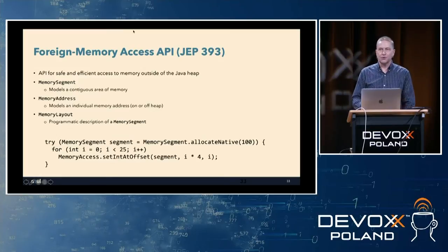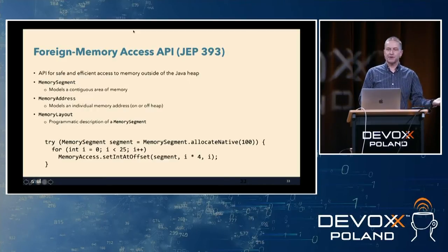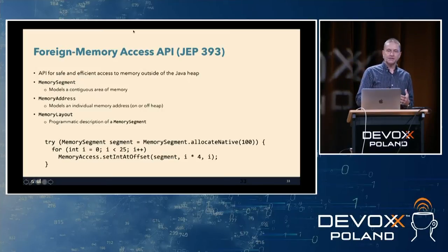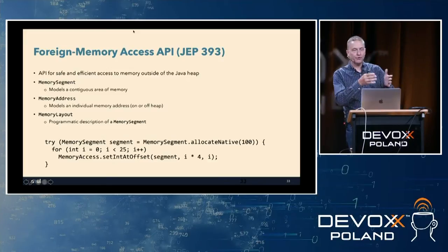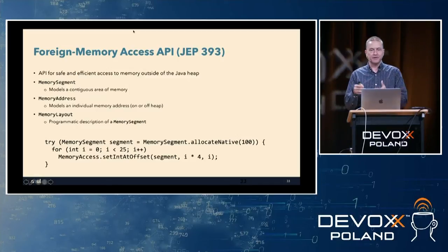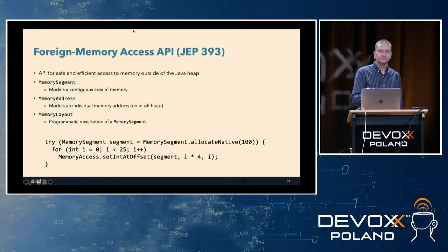A very simple example: we want to allocate some space. For those who've done C programming, this is kind of like malloc. We say we want a space at least 100 bytes in size — MemorySegment.allocateNative(100 bytes). That gives us a reference to it. Then we can use MemoryAccess and do setIntAtOffset — we're putting an integer value at a particular offset into that area of memory. As a programmer, we're responsible for knowing that an integer is four bytes long, so we need to increment by four bytes every time we store a value.